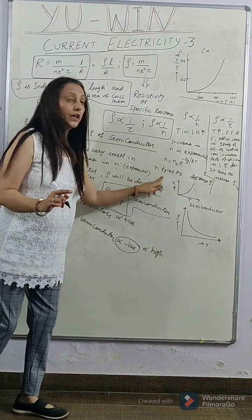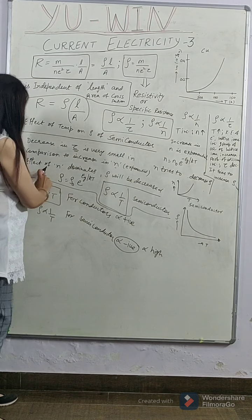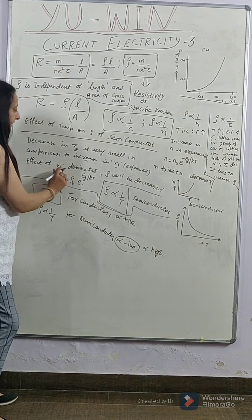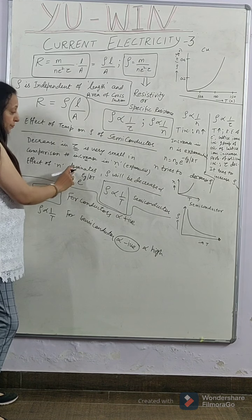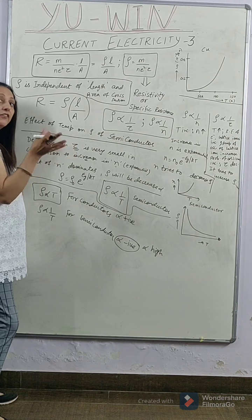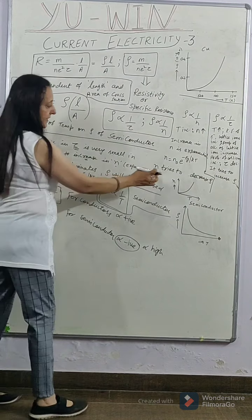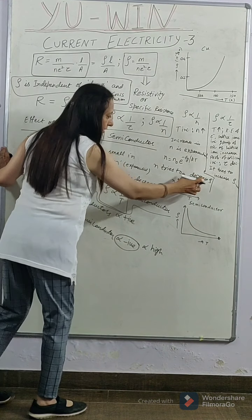So, number density's effect will dominate. Hence, the effect of number density will dominate. Which means whatever number density wants will happen. Number density wants resistivity to decrease.